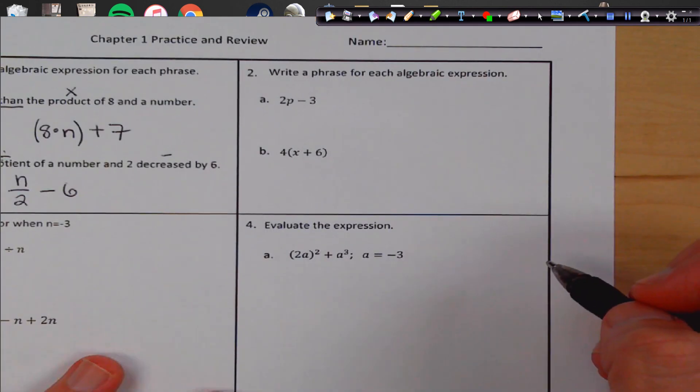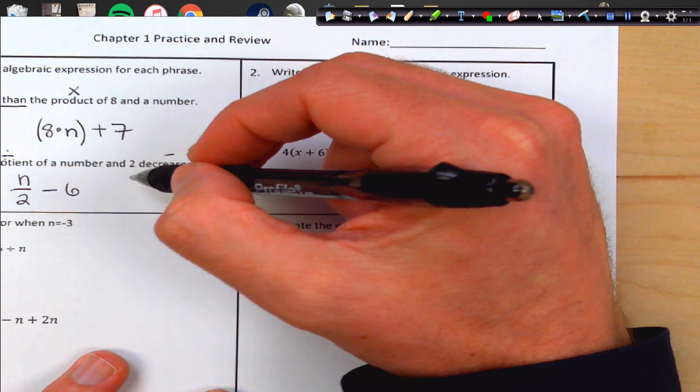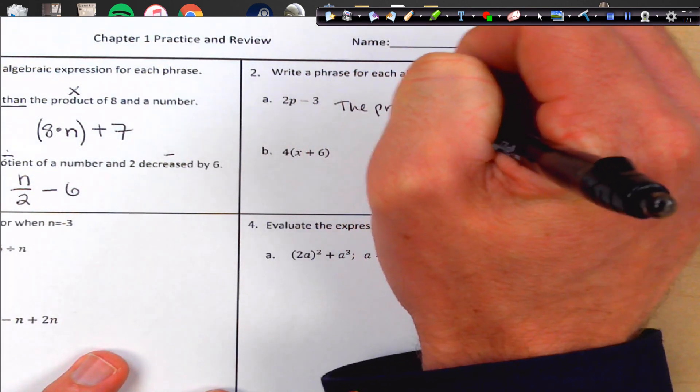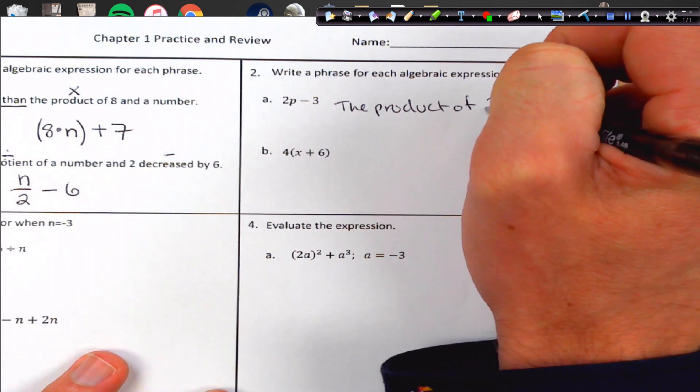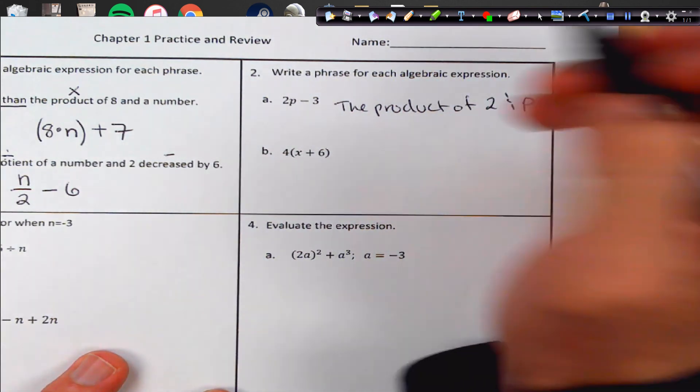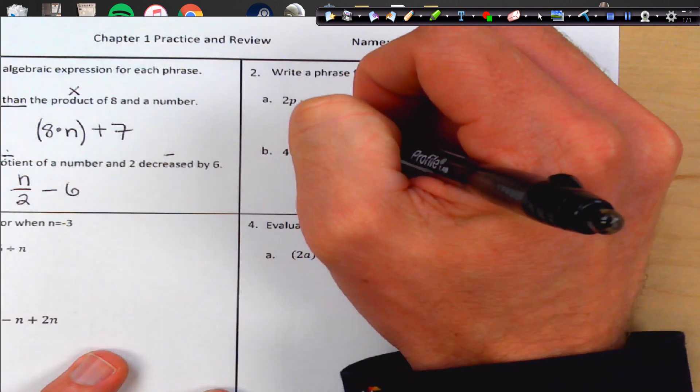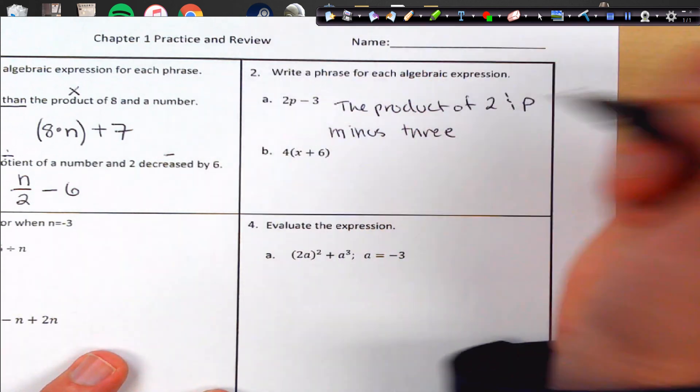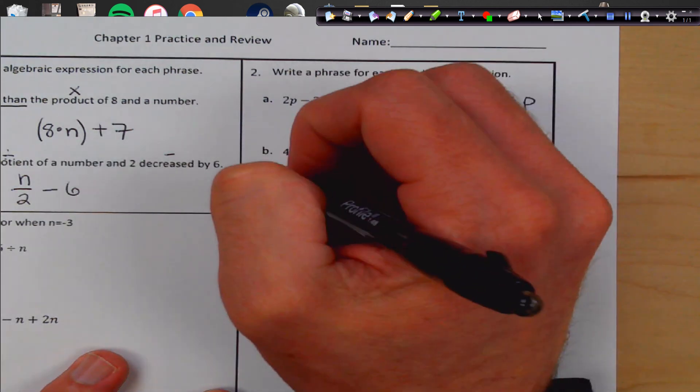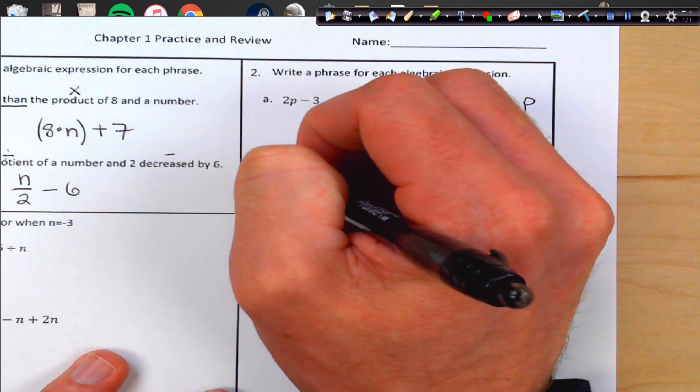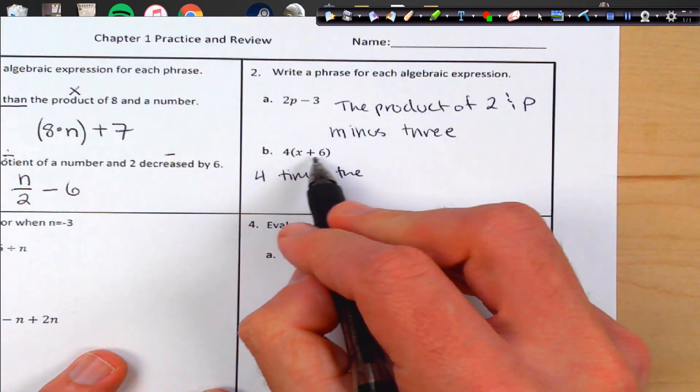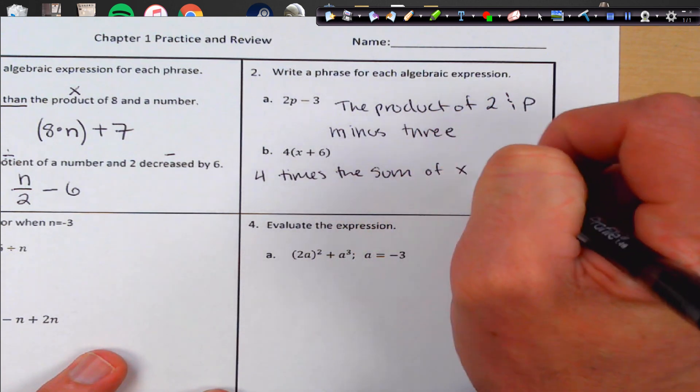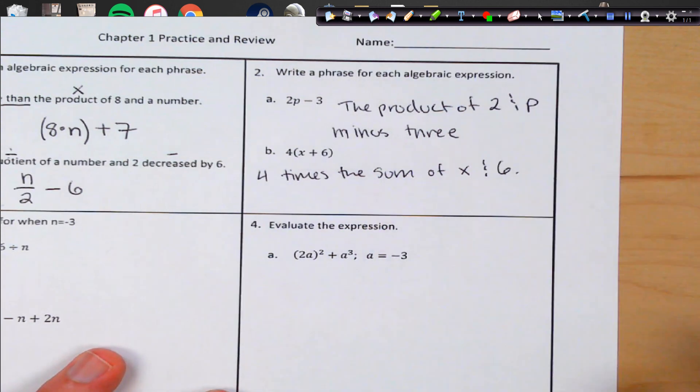Number 2, write a phrase. So this one we could do similar to this right here. We could do the product of 2 and p minus, let's use the word minus, 3. And here we can do 4 times the, we have to do a sum here because it comes first, the sum of x and 6.